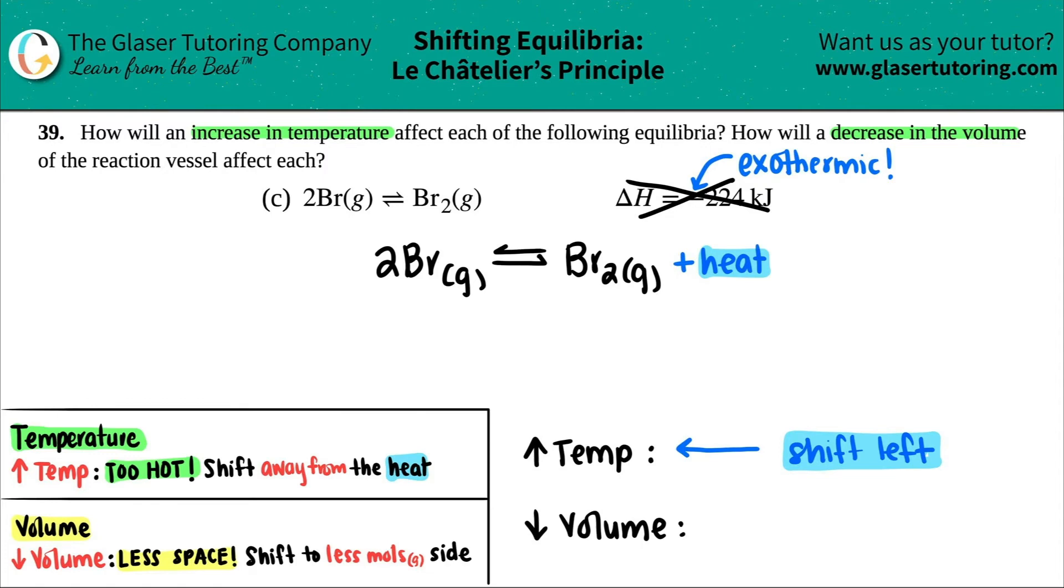So what is the Le Chatelier idea here? Remember, volume is just the space inside of a container or in this case, a reaction vessel. But if you're dropping the volume, you have less and less and less space.